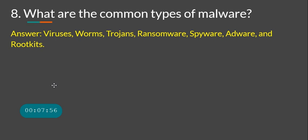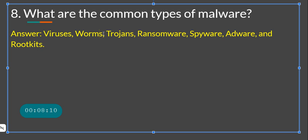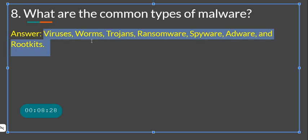What are the common types of malware? Know the differences between viruses, worms, trojans, ransomware, spyware, adware, and rootkits. For example, a worm can self-propagate over the network while a virus cannot. Ransomware encrypts your system so data is no longer accessible and demands a ransom payment.